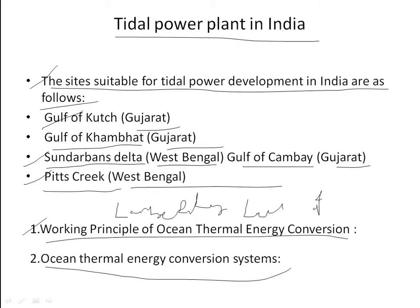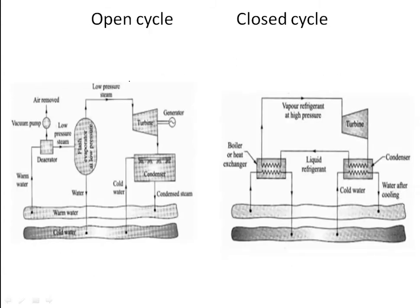OTEC stands for Ocean Thermal Energy Conversion system. OTEC plants can operate using an open cycle or a closed cycle. The open cycle is also known as the Claude cycle, while the closed cycle is known as the Anderson cycle.